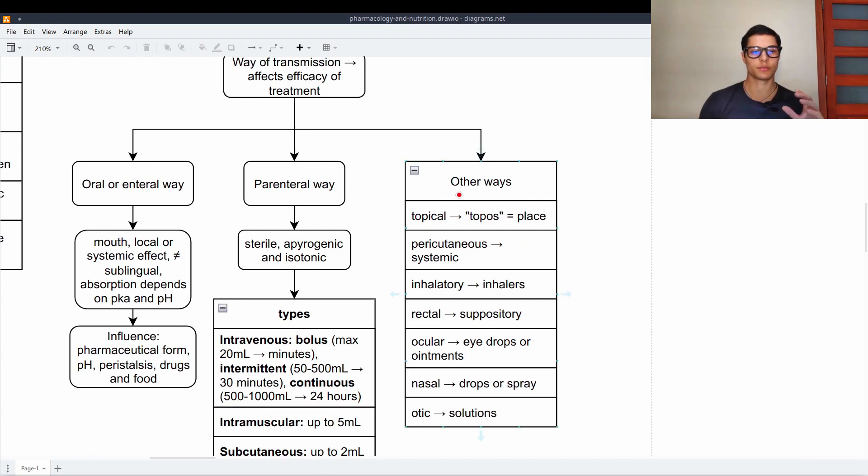Other ways of transmission are topical. Topos means place. So for example, I have knee pain, I will put something on my knee. Percutaneous, which are systemic. Inhalatory, with inhalers. Rectal, ocular with eye drops or ointments. Nasal, drops or spray. And aortic, such as solutions.